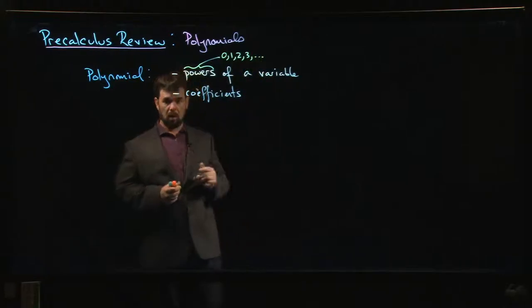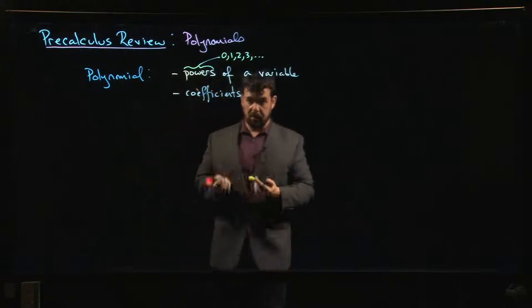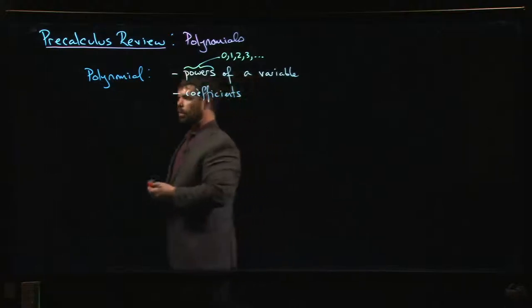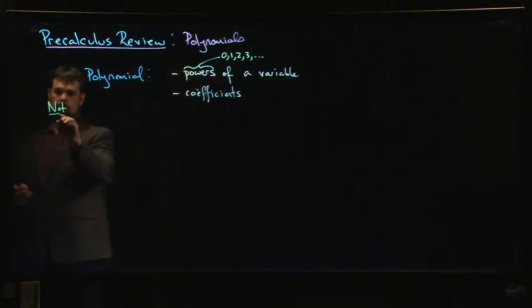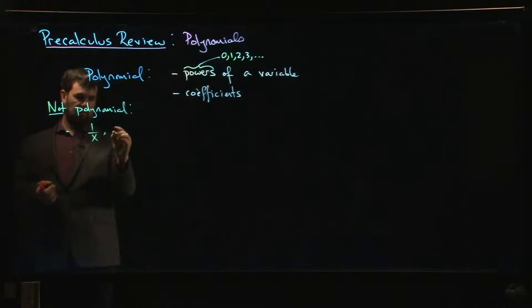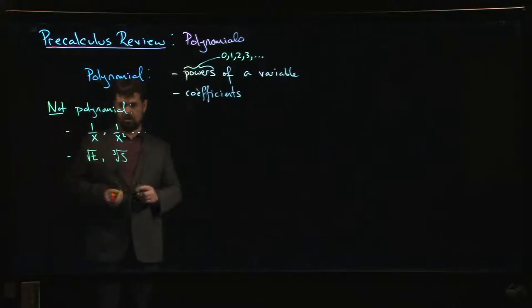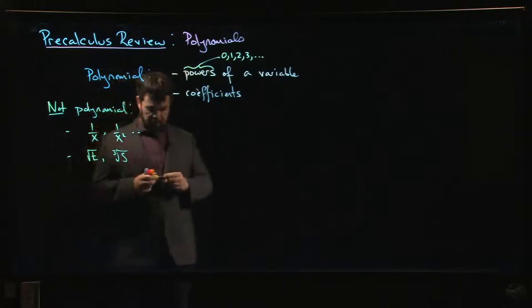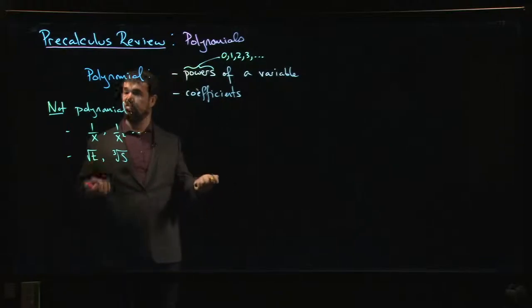Things that are not polynomials include anything with like one over x, one over x squared - these are examples of what are called rational functions. Root functions like square root of t, cube root of s, these are not polynomial functions. Also any of your more complicated functions like trig functions, exponential functions, logarithms, certainly not polynomials.